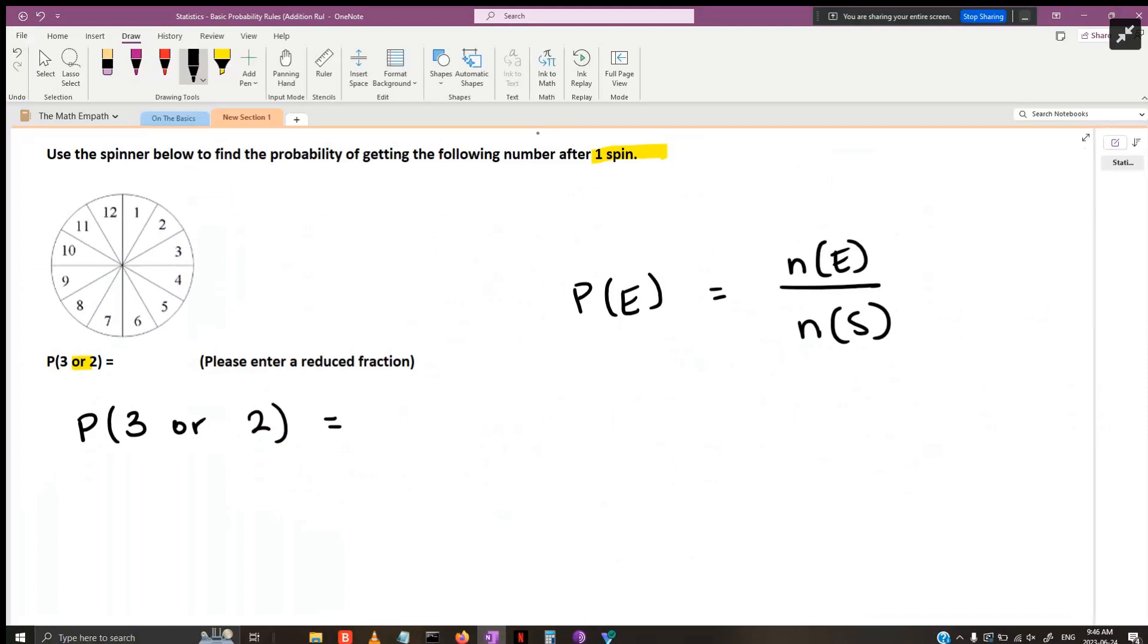We know the general setup will be to find the probability of getting a three and add that to the probability of getting a two. Now the question is what do those probabilities look like.